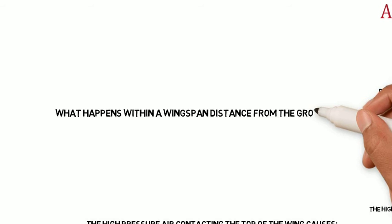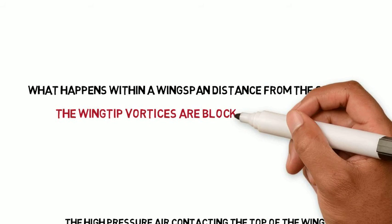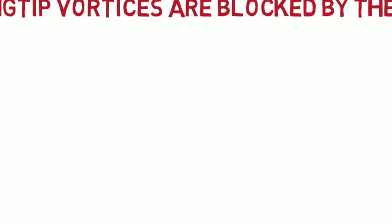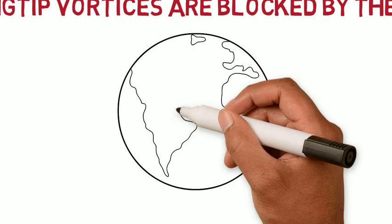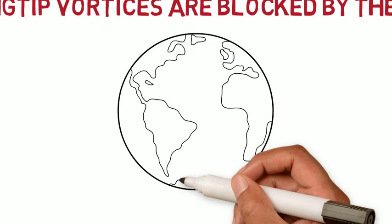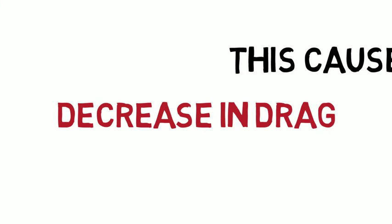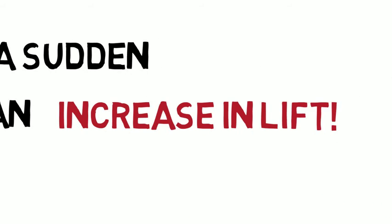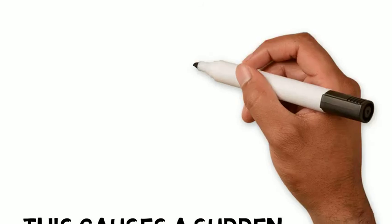But what happens when the plane gets within a wingspan distance from the ground? The wing tip vortices are actually blocked by the ground. You still have that high pressure air below trying to flow up to the low pressure air above the wing, but because the airplane is so close to the ground, the ground is blocking that high pressure air from flowing to the top of the wing. This causes a sudden decrease in drag and an increase in lift — which is why when your students get down nice and low on landing, you can experience what's called float or a balloon effect.